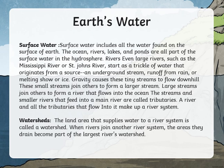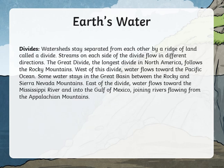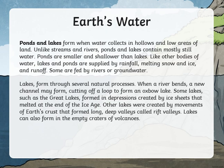We are also going to discuss the different types of Earth's water. It can be either surface water or groundwater. Surface water, from its name, includes all the bodies of water found on the surface, such as oceans, rivers, lakes, and ponds. We are also going to talk about watersheds, which supply water to rivers, and we will also be discussing divides, which are also part of surface water.